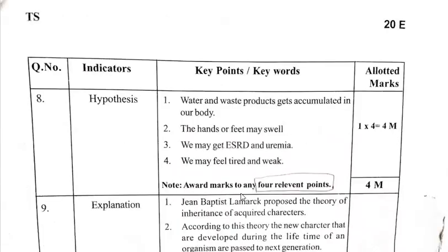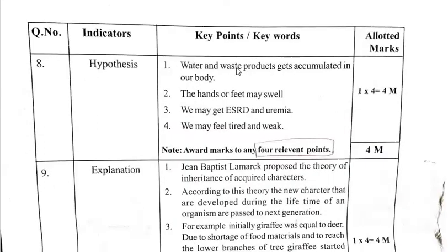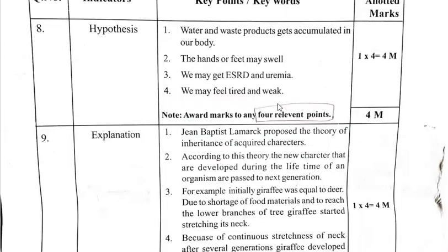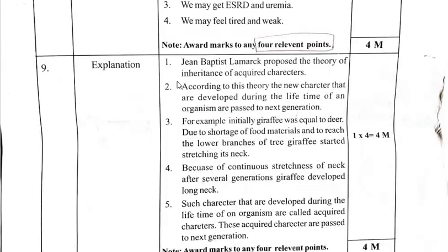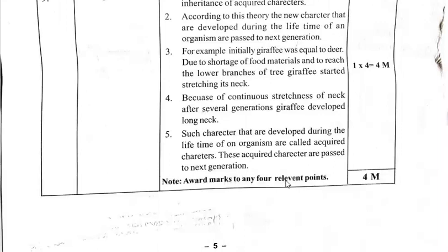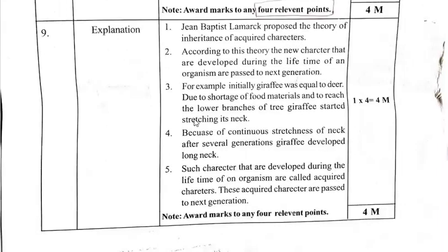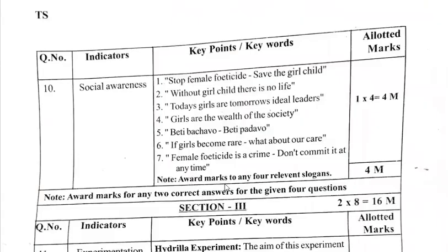Award marks for any four relevant points — not only the four listed, but any four relevant points as well. If you wrote any other related points, you will still get four out of four. Award marks to any four relevant points — five points are given, and if any four are present you get four out of four marks. No need to write all points; any four relevant points to the question earns four out of four.